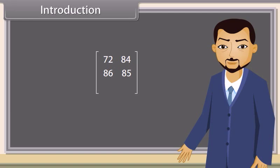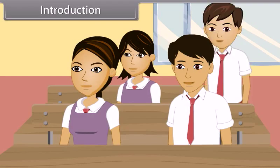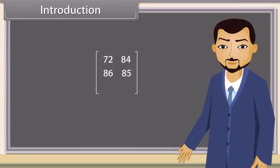Prateek, you tell me now. Teacher, 67 in science and 72 in maths. Can you see, I have written your marks in this bracket. What does this represent? Anyone? This represents a matrix. Today, we will learn what matrices are and its operations. Come, let's start.